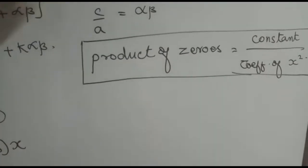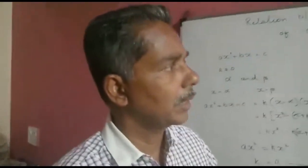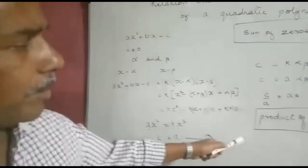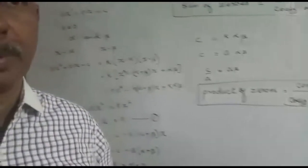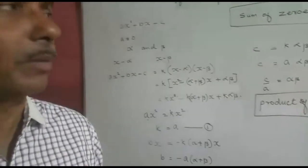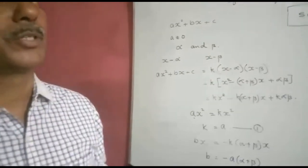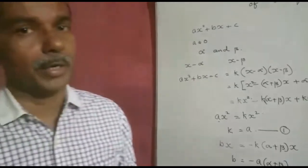As we have considered, the polynomial is in x. If the polynomial is in y, the sum of zeros will become minus coefficient of y upon coefficient of y squared, and the product of zeros will be constant upon coefficient of y squared. So depending upon the variable, we will change that. That is the relation between zeros and coefficients of a quadratic polynomial.